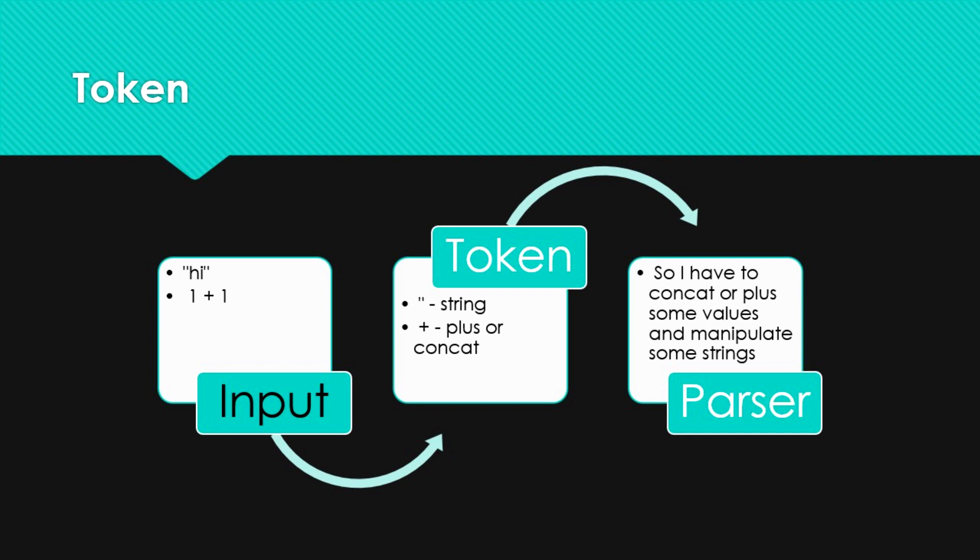So we pass the input, and from the input we generate the tokens from the lexer. For example, a string and the plus — one colon character. So the token passes to the parser. I can concatenate values and emulate strings. You know? And that is what happens.